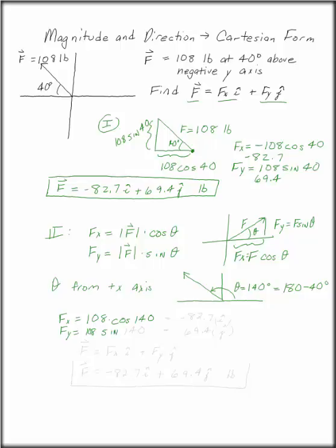If you write theta always from the positive x-axis, the signs will take care of themselves. And this is minus 82.7 i and 69.4 in the j direction.